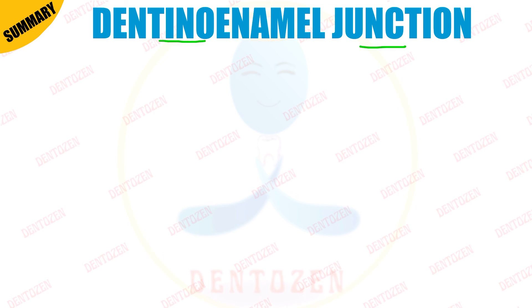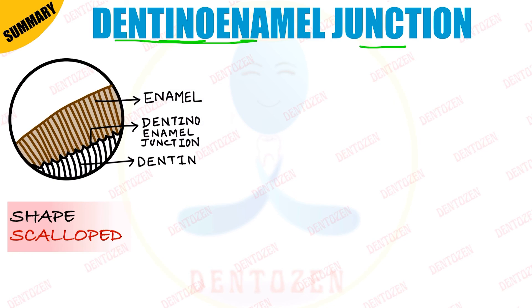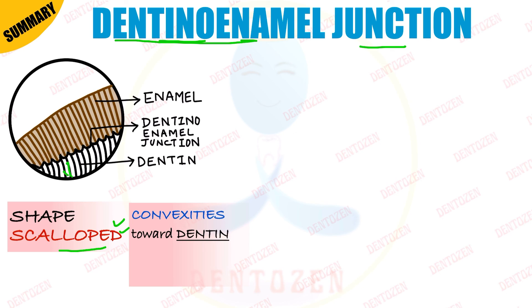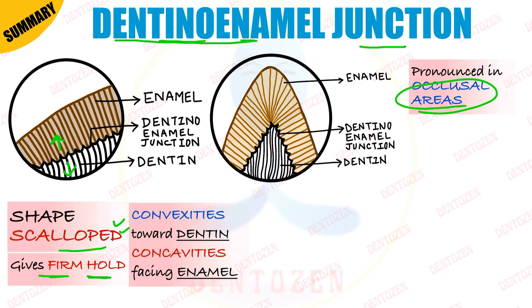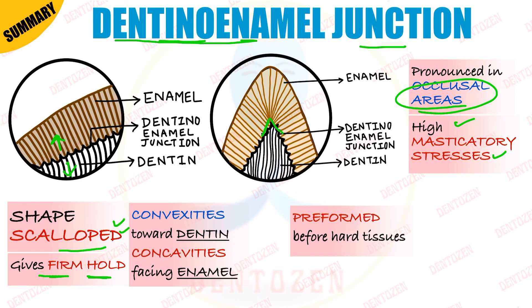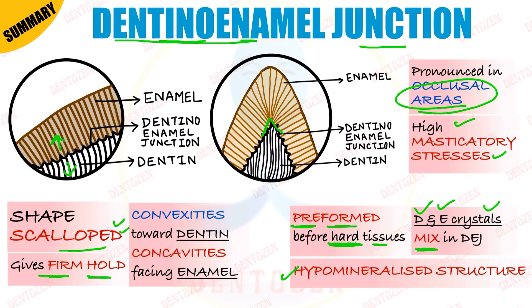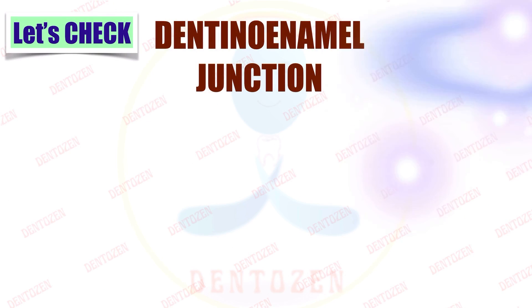Quick summary: the dentino-enamel junction is present between enamel and dentine; its appearance or shape is scalloped — draw the scallopings in your diagram. Convexities are towards dentine and concavities are towards enamel. This scalloped form allows enamel to have a firm hold over dentine. It is most pronounced in the occlusal areas where masticatory stresses are high. It is pre-formed before the hard tissues and is a hypo-mineralized structure where dentine and enamel crystals get mixed.